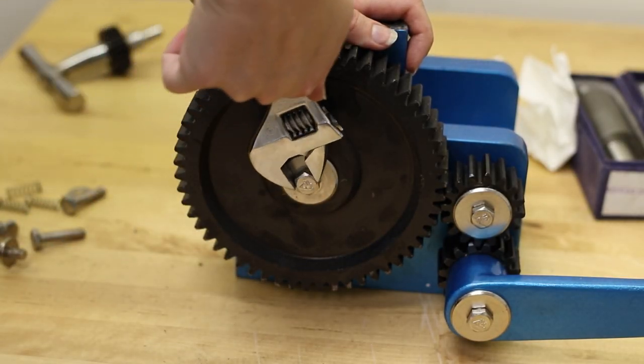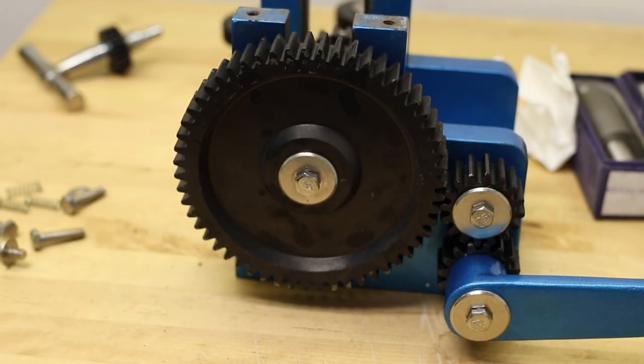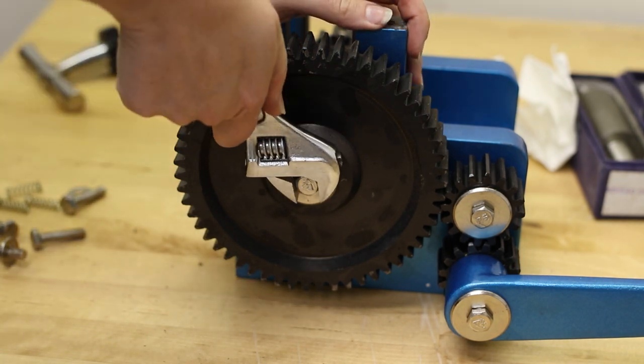Alright, so now we're onto the bottom roller. Depending on what you're doing, you might not need to do this part. A lot of the pattern rollers, for example, you use a plain flat roller on the bottom and you use the pattern roller on top. In this case, since we're switching to a pair of wire rollers, we have to change both of them out.